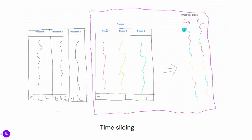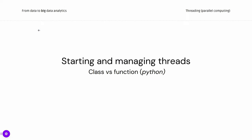The operating system says: okay, you come first, this chunk comes first, this chunk comes after that one, and so forth. This is how the operating system manages threads. So let's get into the code. We have two possibilities to work with threads in Python: we can do it with functions, and we can do it with classes.